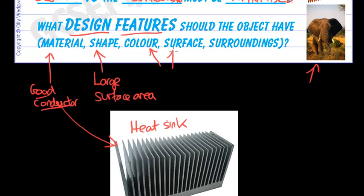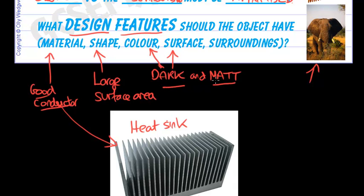Color and surface: objects can emit radiation much better — they are good emitters — if they are dark and matte textured. So dark color like black or near to black, and matte textured, not shiny. This increases heat transfer by radiation. Hence why an elephant has matte, dark-colored ears, and this heat sink is a dark color and not shiny.